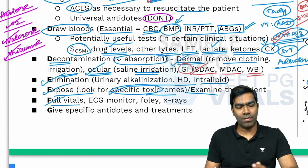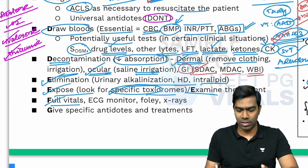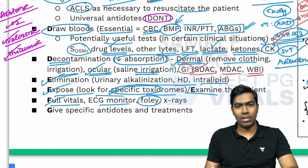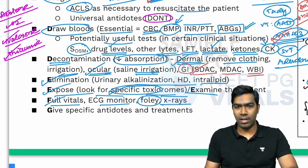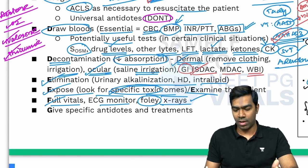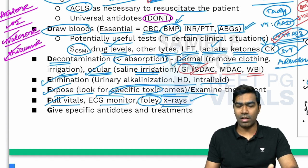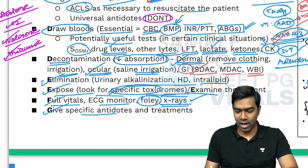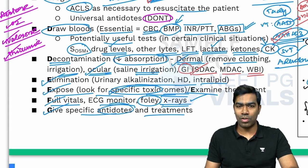F stands for full vitals — continuous BP and pulse rate monitoring is very important for almost all poisoned individuals. If warranted and facility is available, attach a continuous ECG monitor. In selected situations like anticholinergic toxidrome, the patient may have urinary retention, so catheterization may be important. Chest X-ray is important in paraquat poisoning, and abdominal X-ray is important in acute iron poisoning to visualize pills. G stands for giving specific antidotes and treatments depending on the poison ingested — if you know an antidote, just go ahead and give it.